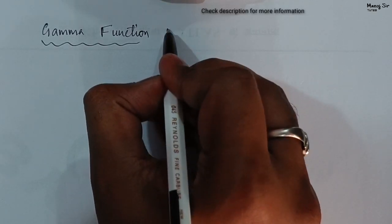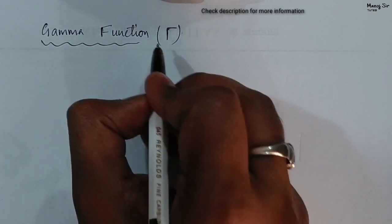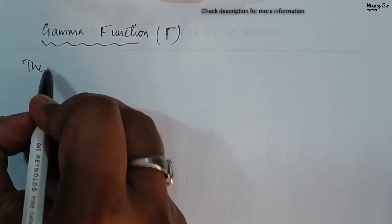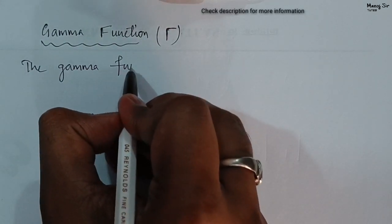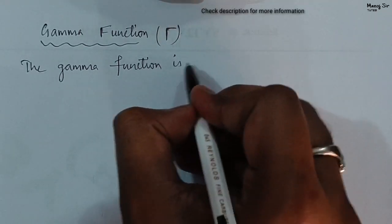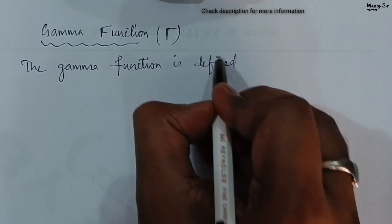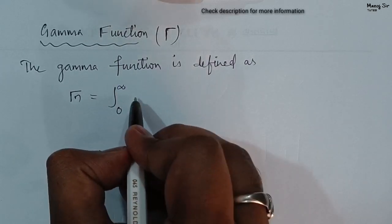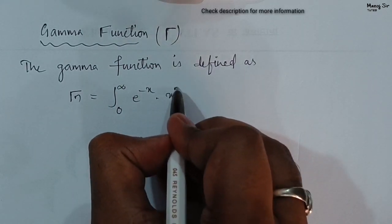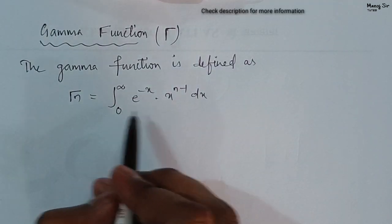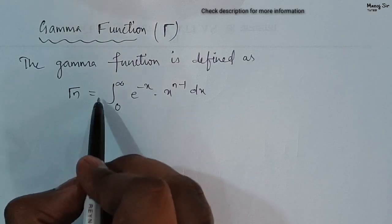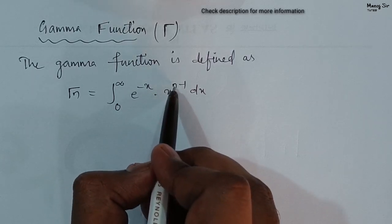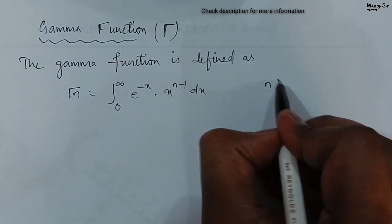The gamma function is denoted by this symbol — a vertical line and a horizontal line. The gamma function is defined as: Gamma of n equals the integration from 0 to infinity of e to the power minus x, into x to the power n minus 1, dx. This is the general formula for the gamma function, provided n is greater than 0.